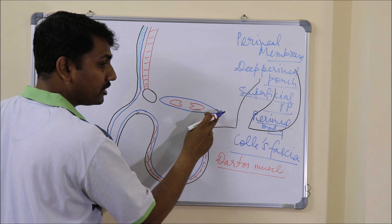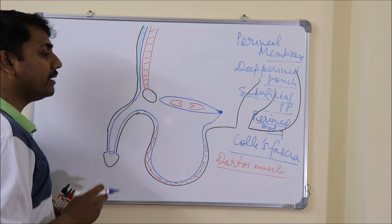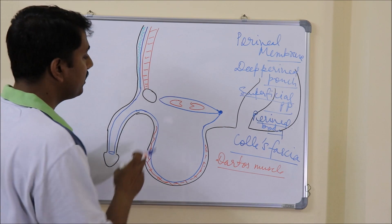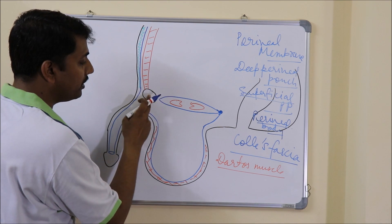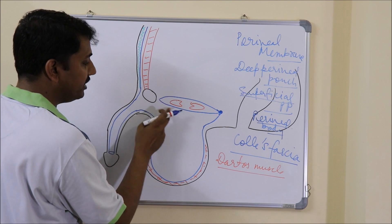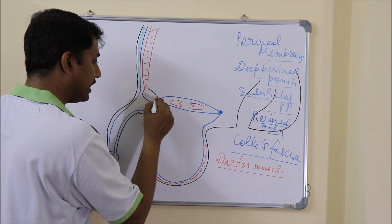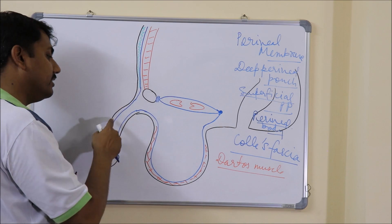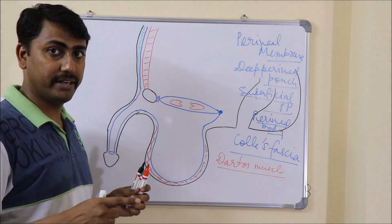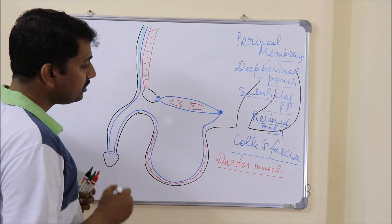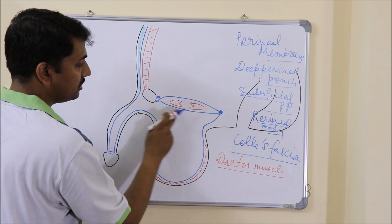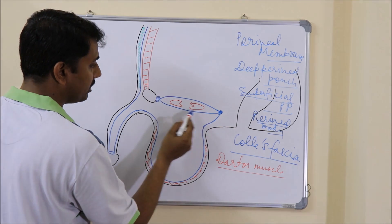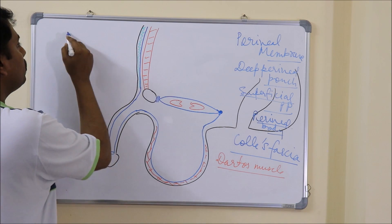At the perineal body, or the posterior border of the perineal membrane, the Colles fascia gets attached. There is a gap between the pubic bone and the junction of the superior and inferior fasciae. This gap is filled by connective tissue, and through this area pass the dorsal nerve of the penis and the deep dorsal vein of the penis. This whole structure — the superior fascia, the perineal membrane, and the muscles in the deep perineal pouch — is collectively called the urogenital diaphragm.